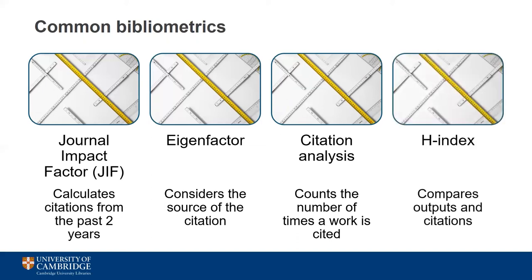And then finally there's the h-index. This assesses individual researchers by comparing the number of outputs they produced with the number of times each one has been cited. The outputs are then ranked in order from highest number of citations to lowest, and the point at which an output has more citations than its ranking is known as its h-index. This metric is often used to track the progress of a researcher over time to show how their index number increases, but this can also unfairly represent early career researchers who've not yet had the opportunity to build up their publications list.